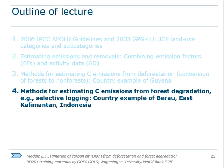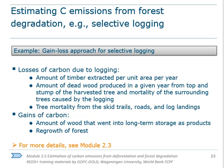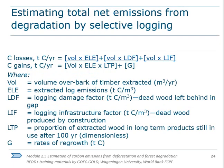The next example is estimating emissions from degradation caused by selective logging in East Kalimantan, Indonesia. Here, a gain-loss approach was applied whereby both carbon losses as well as gains are considered. Losses are calculated by combining data on timber volume extracted with the estimated carbon losses experienced through incidental damage and infrastructure establishment associated with selective logging. Carbon gains from potential forest regrowth and wood stored in eventual wood products like furniture were also accounted for, which ultimately decreases the final magnitude of carbon losses. Module 2.3 goes over this approach in much more detail.